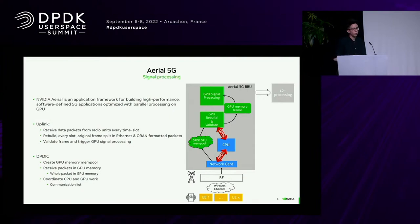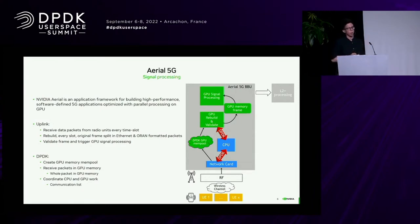I would like to provide three practical use cases where we used this library successfully. The first one is the Arial 5G software stack. NVIDIA recently started this effort in the 5G ecosystem, providing the lower layer of the 5G network by doing signal processing on the GPU. This is a GPU real-time packet processing use case because packets are flowing into GPU memory and you have to apply GPU signal processing algorithms on top of them.